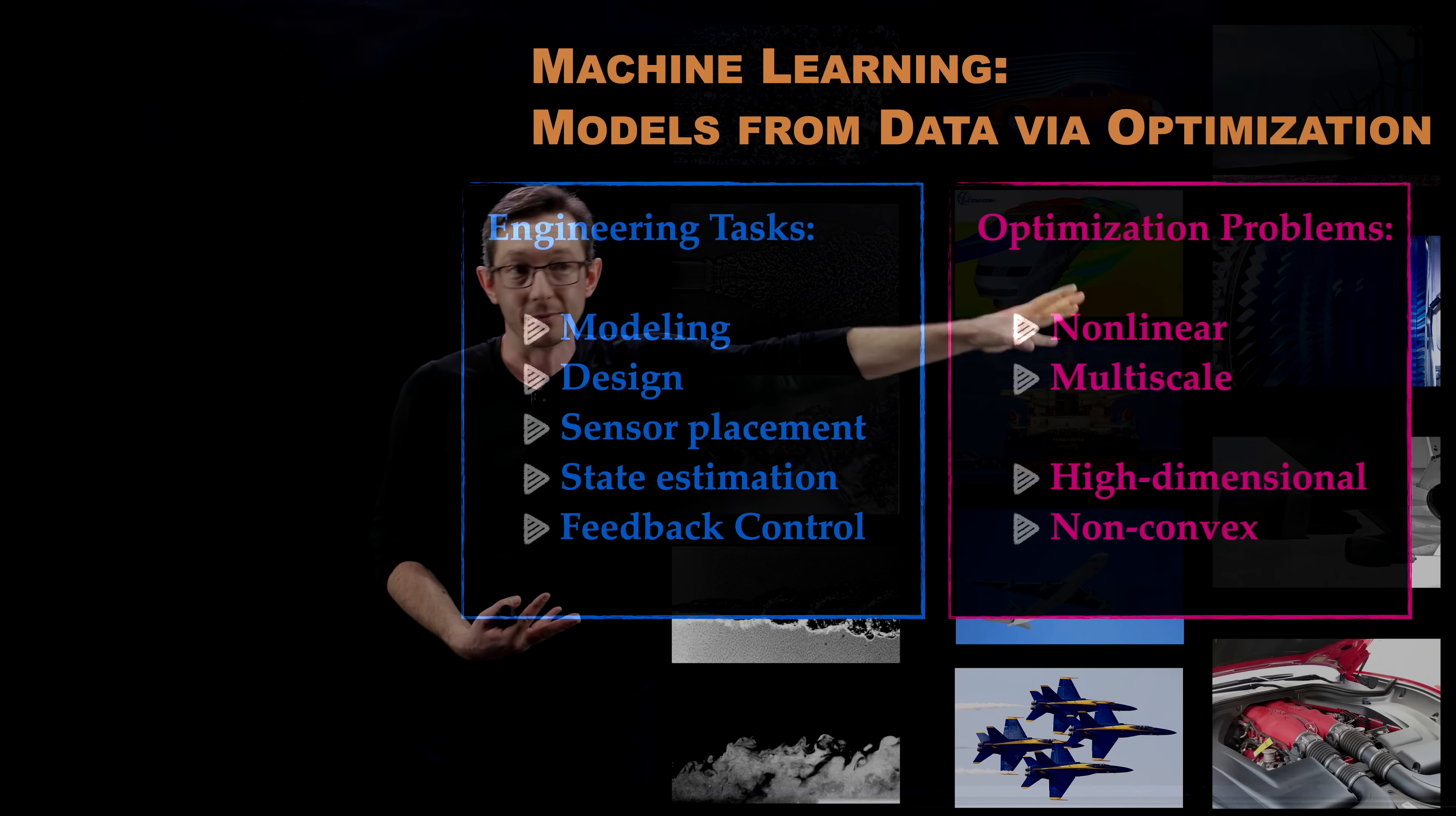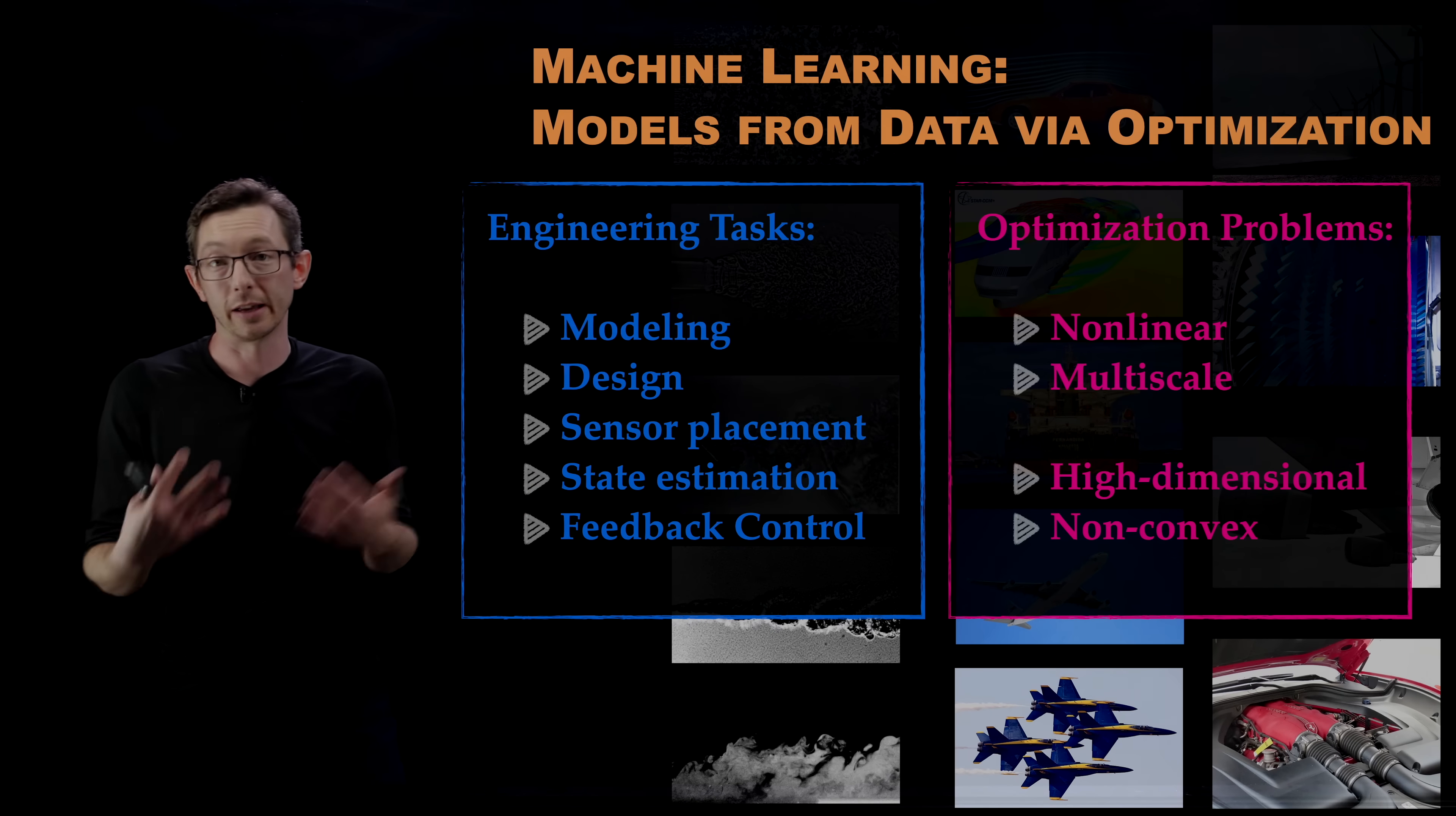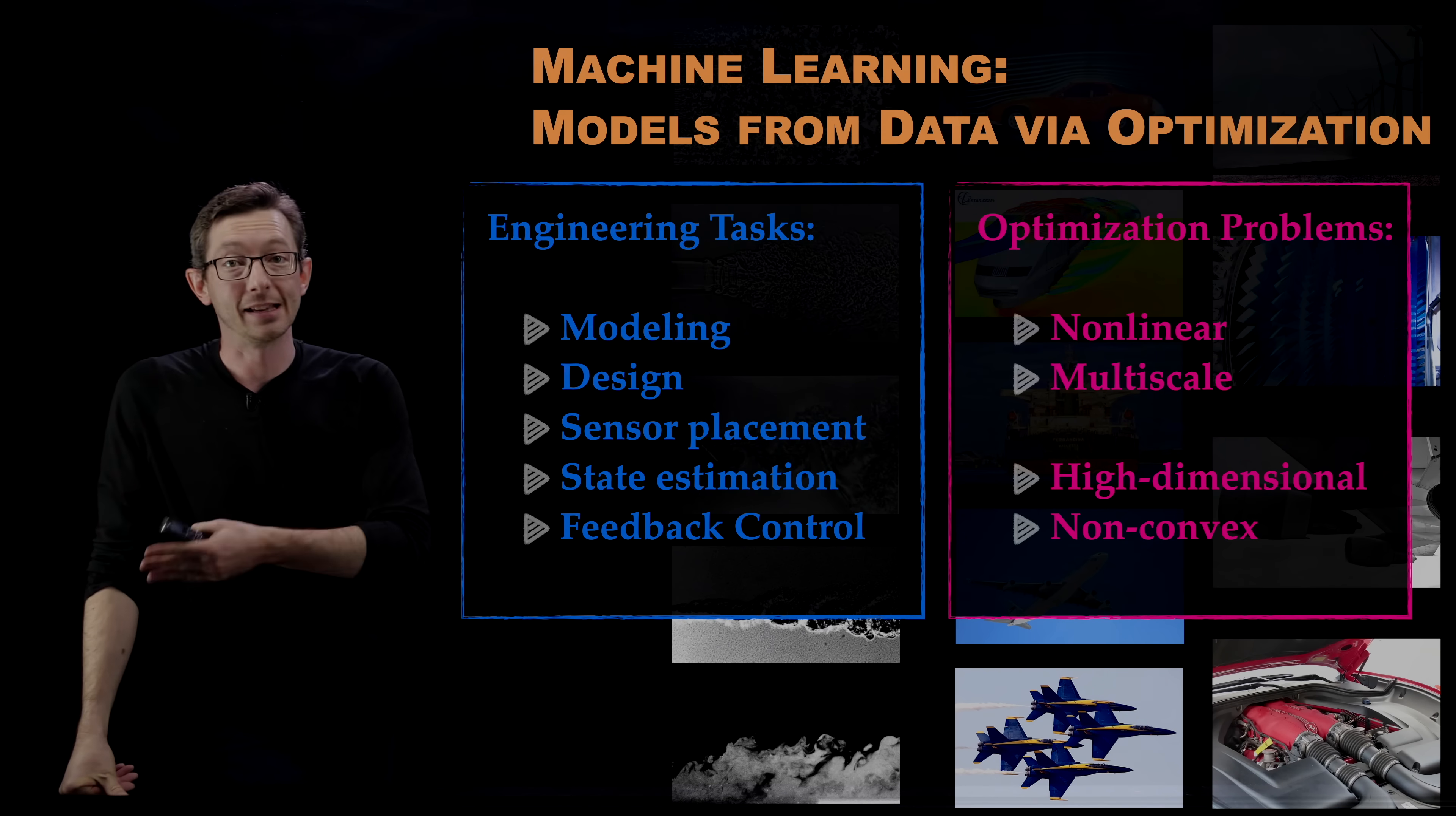They have the same characteristics of high-dimensional, non-convex characteristics that most machine learning models have when we train them. When we train a deep neural network, it's also high-dimensional and non-convex. These really do go very well together that we can use tools from machine learning to solve engineering optimization problems. That's a very exciting and rapidly growing area of both science and engineering.